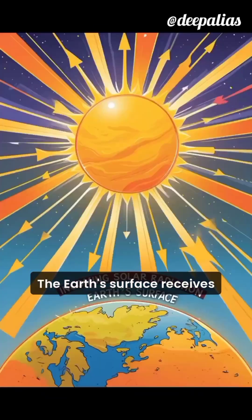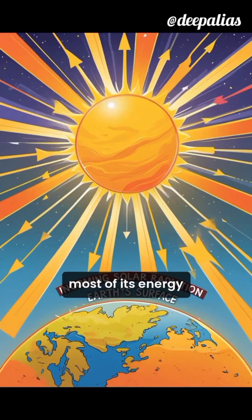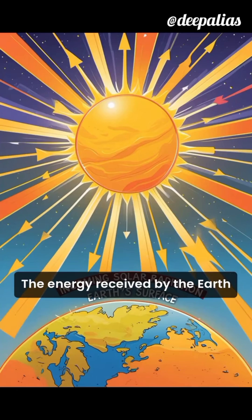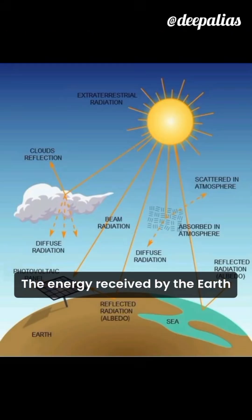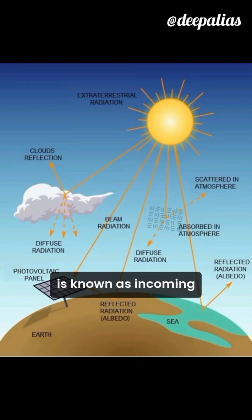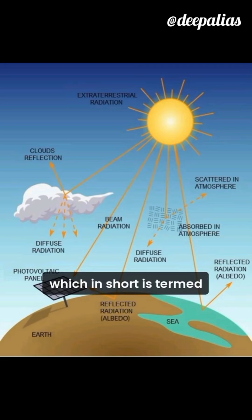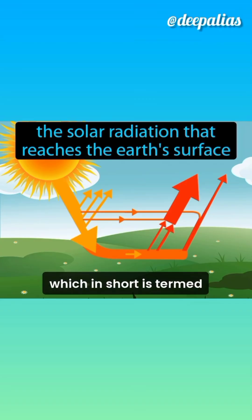The Earth's surface receives most of its energy in short wavelengths. The energy received by the Earth is known as incoming solar radiation, which in short is termed as insolation.